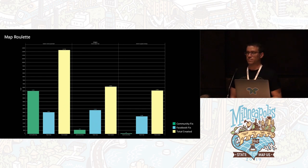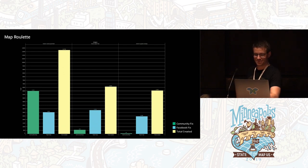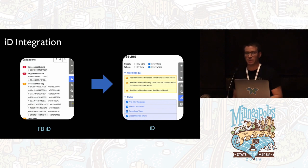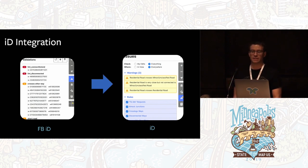Shout-out to Martijn for the new MapRoulette — it is so good. But beyond reactive fixes, we want to be proactive as well, and that means stopping bad data from ever getting on the map.